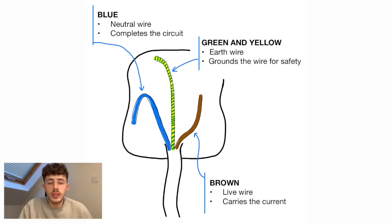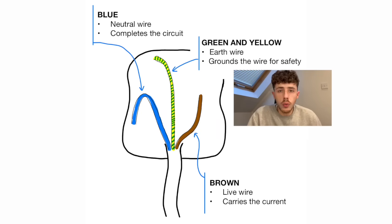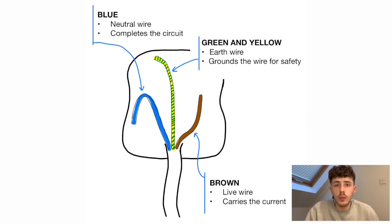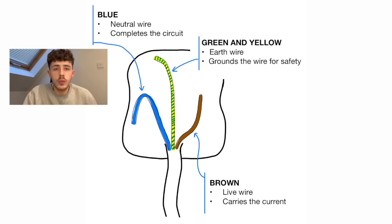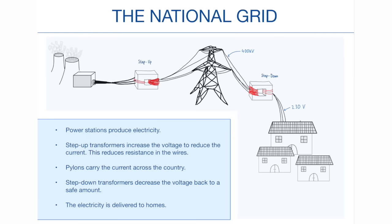You need to be able to label the different parts of a household plug. There are three wires that go into a plug: the earth wire which is green and yellow, the live wire which is brown, and the neutral wire which is blue. The final part of electricity involves the national grid and transformers. The electricity is produced in power stations and is distributed to our homes with the help of step-up and step-down transformers.